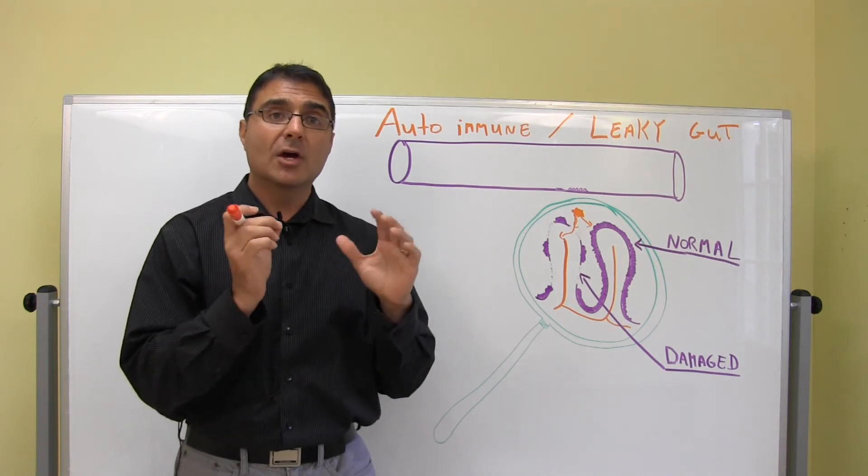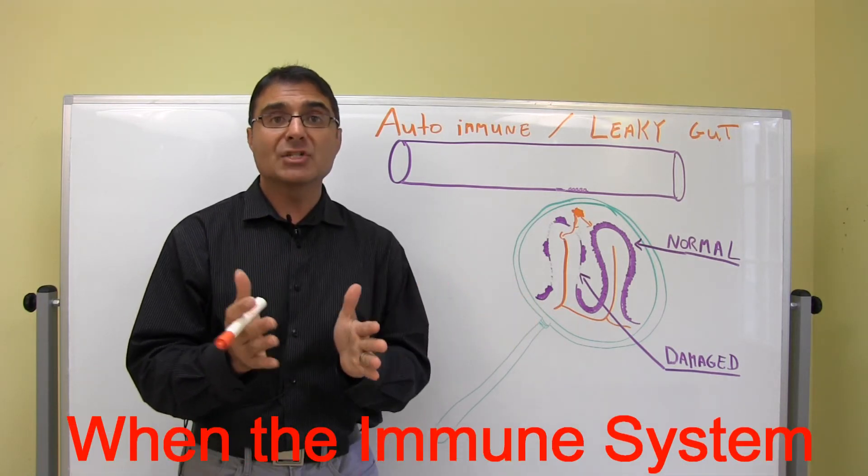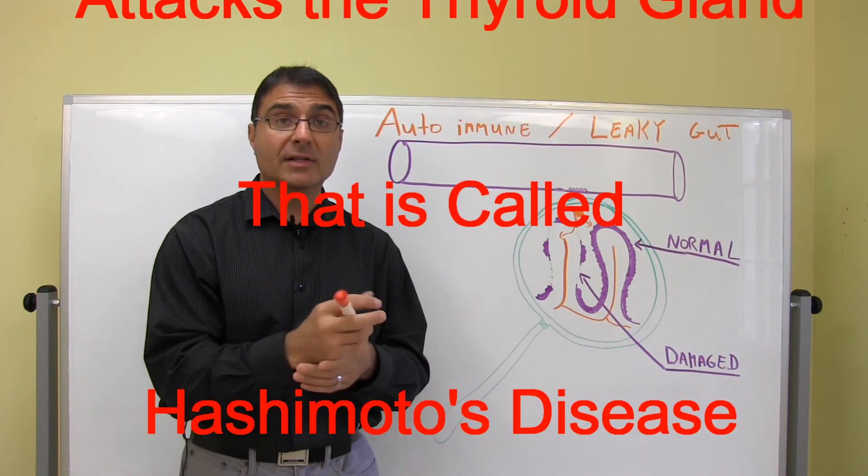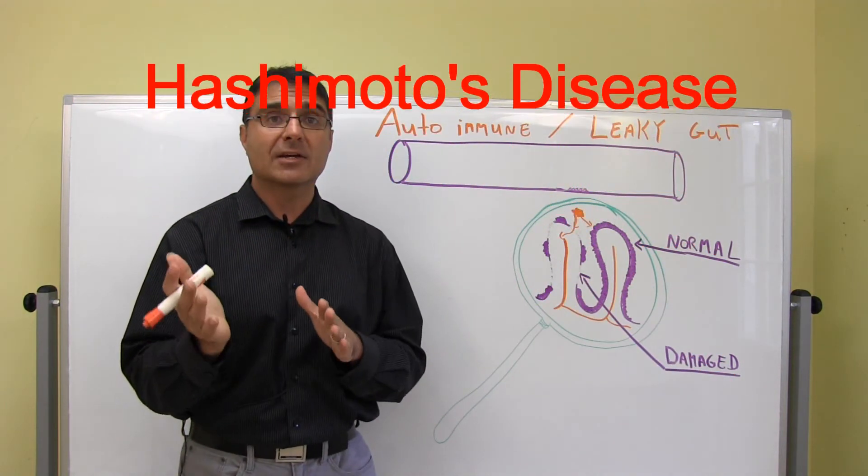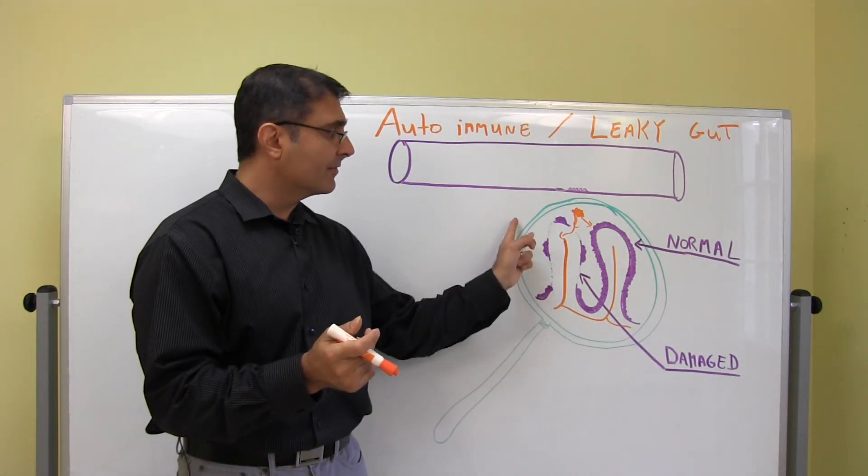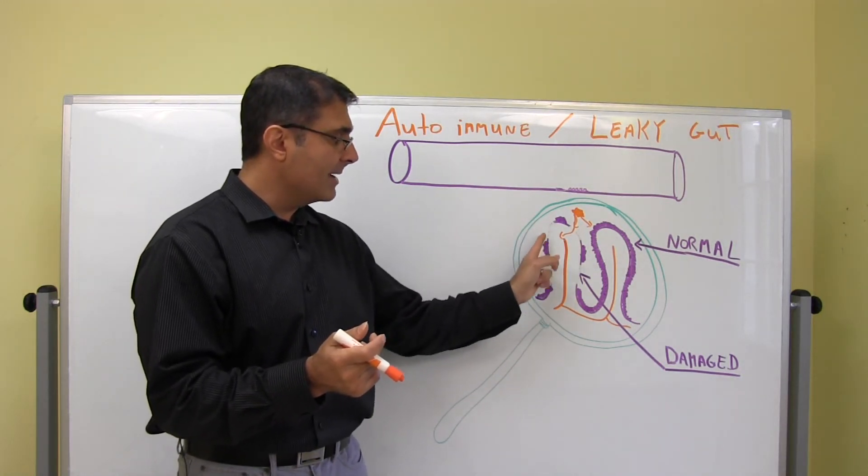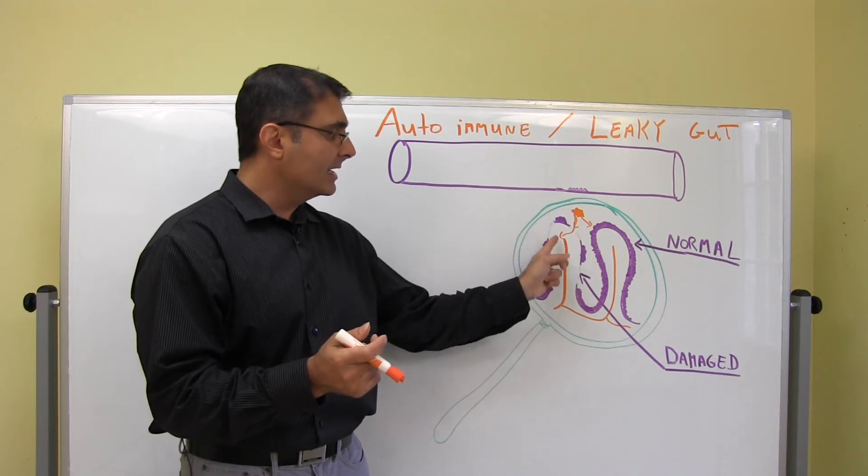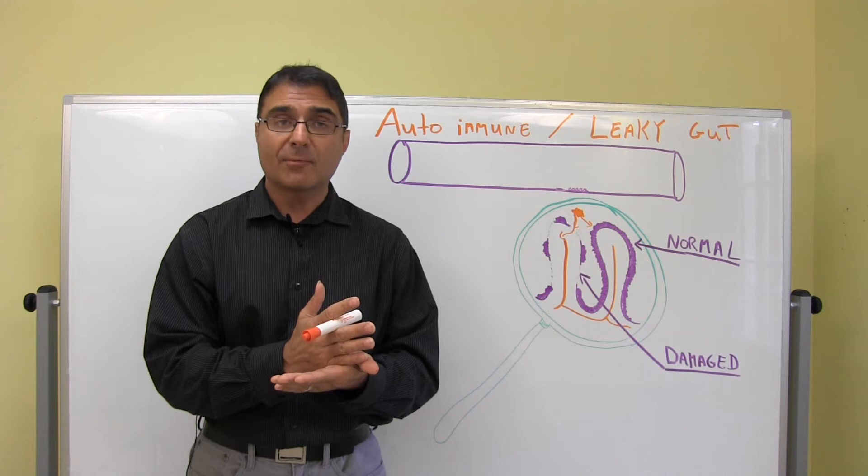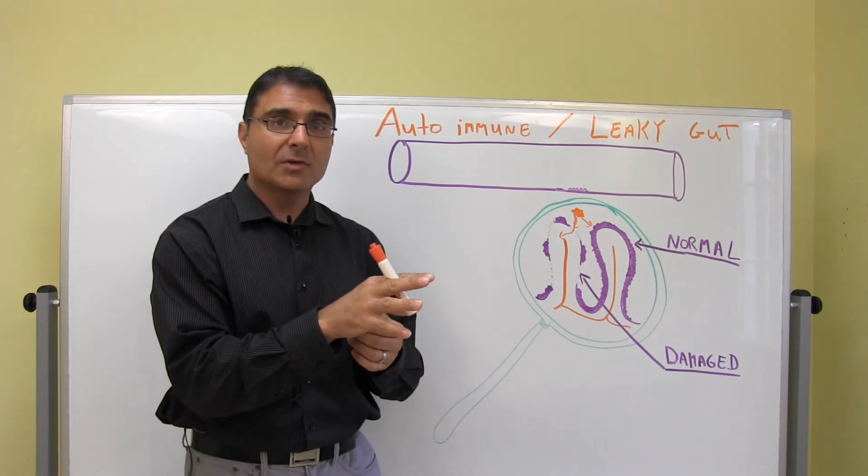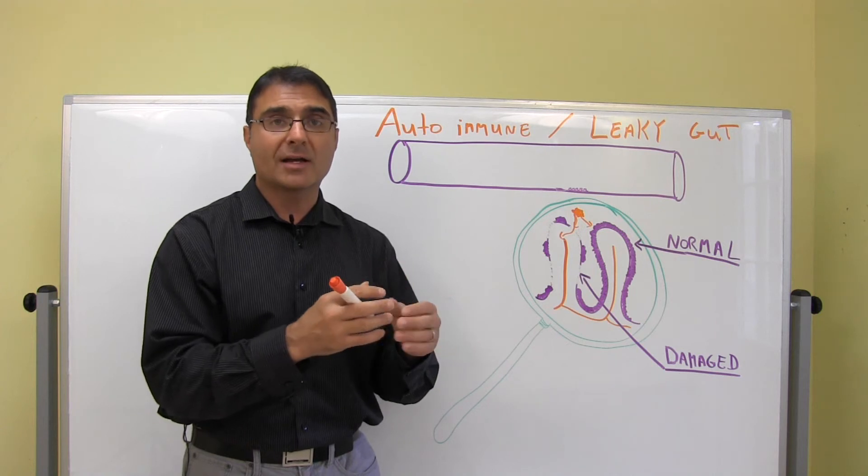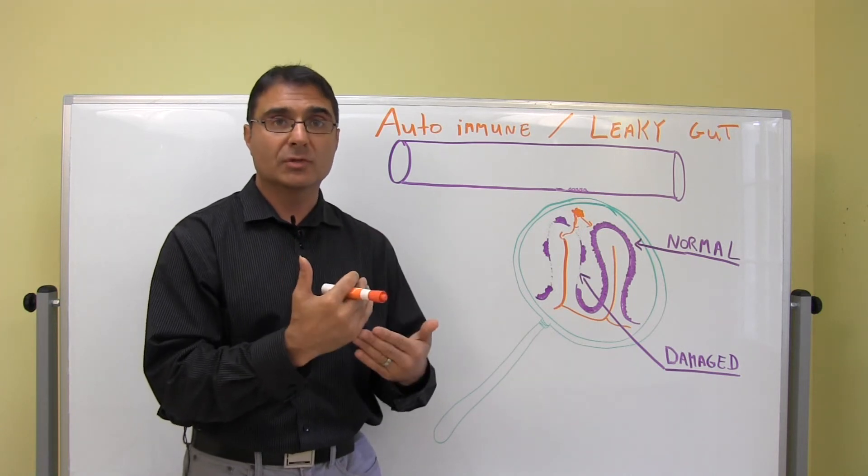When someone has, for example, like autoimmune Hashimoto's thyroiditis, the immune system is attacking the thyroid gland. But in my opinion, one of the things that could potentially be happening are toxins. They leak in from the gut because of the damaged microvilli. They get into the bloodstream. They deposit in the thyroid, and all the body wants is self-preservation. So it's attacking those toxins that are in the thyroid.